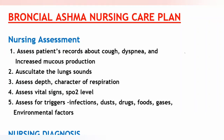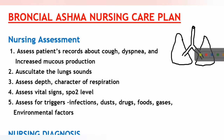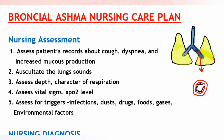Bronchial asthma nursing care plan. Bronchial asthma is a chronic inflammatory disease of the respiratory tract, characterized by bronchial hyperactivity and respiratory obstruction.